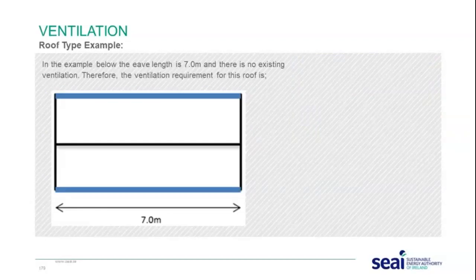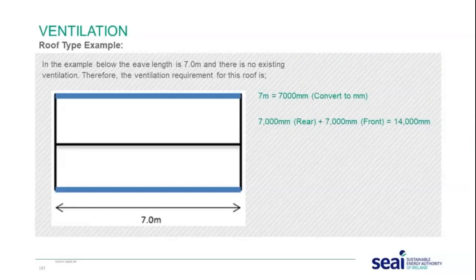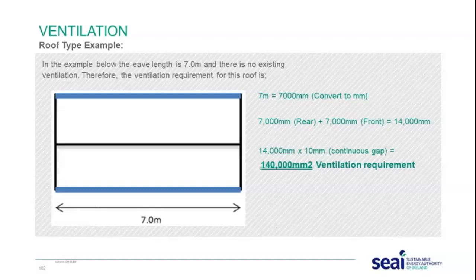A simple example for a standard rectangular dwelling: where the eaves length is 7 metres and there is no existing ventilation. Convert 7 metres to 7,000 millimetres. The front and rear gives 14,000 millimetres total. Multiply by the 10 millimetre continuous strip to give 140,000 millimetres squared of ventilation requirement. That is the basic calculation for installing ventilation on the longest side of the roof.